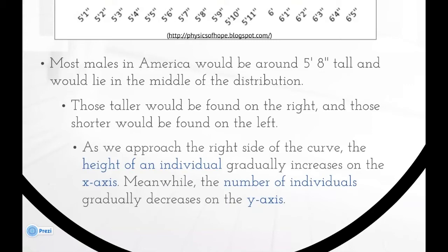As we approach the right side of the curve, the height of an individual gradually increases on the x-axis. Meanwhile, the number of individuals gradually decreases on the y-axis.